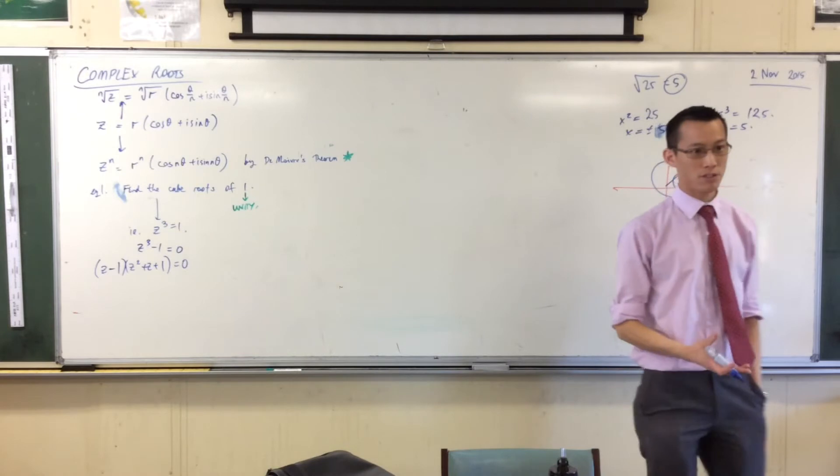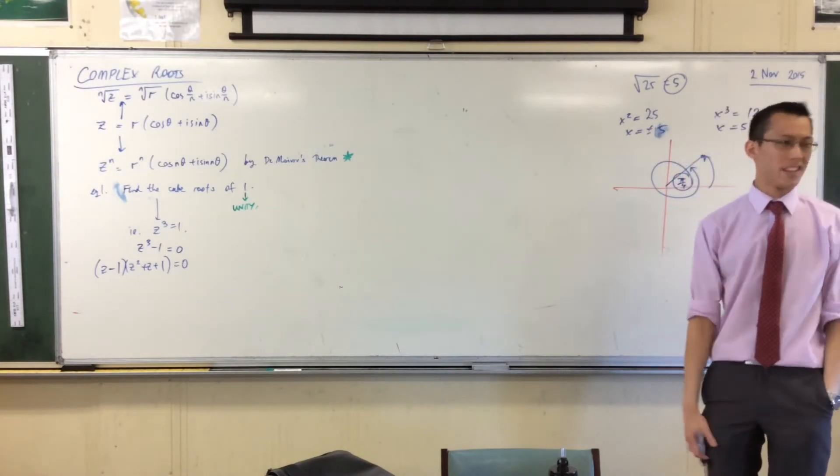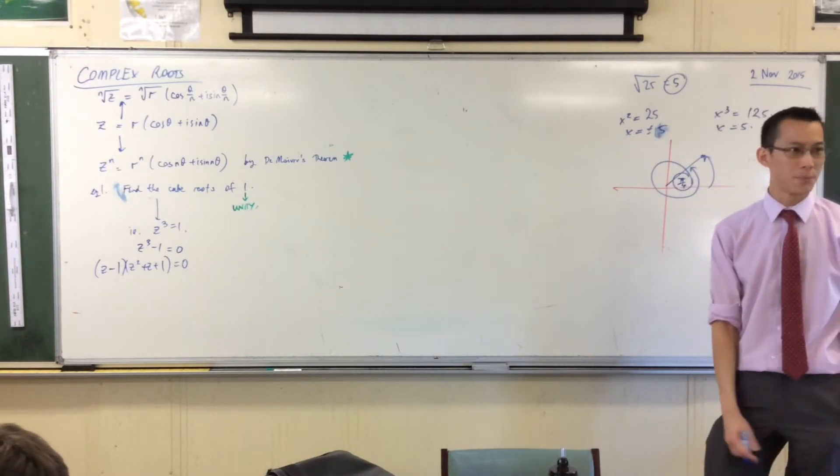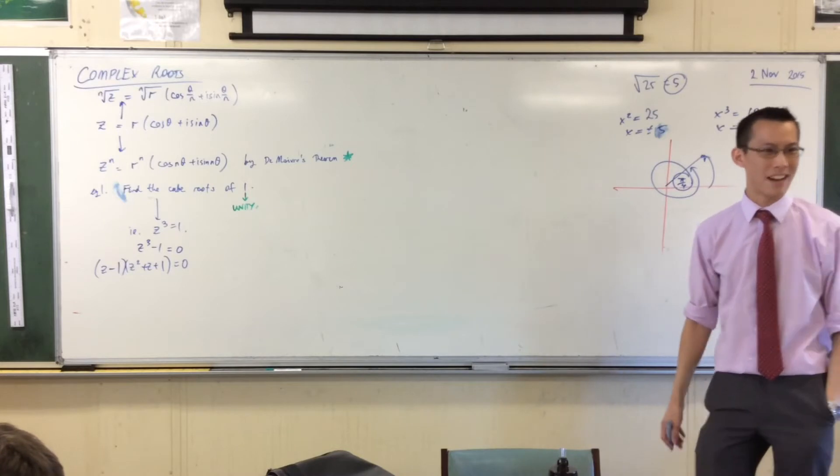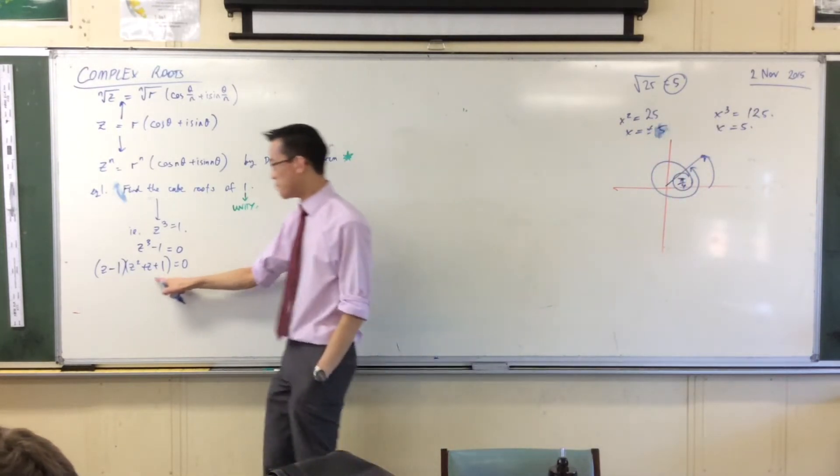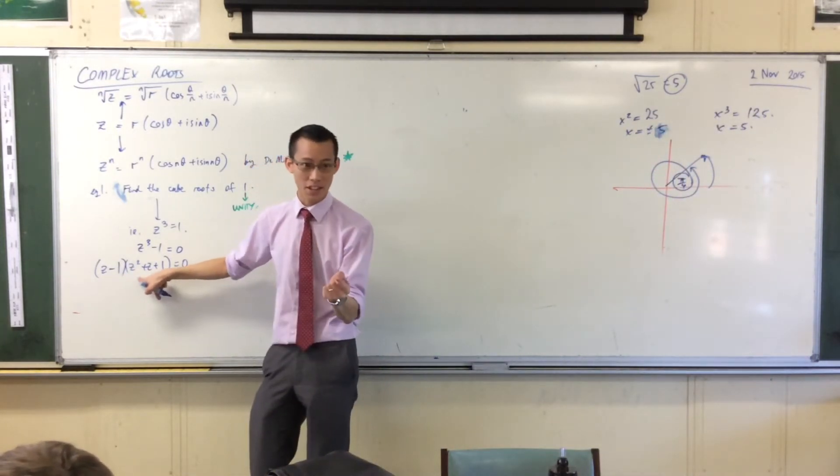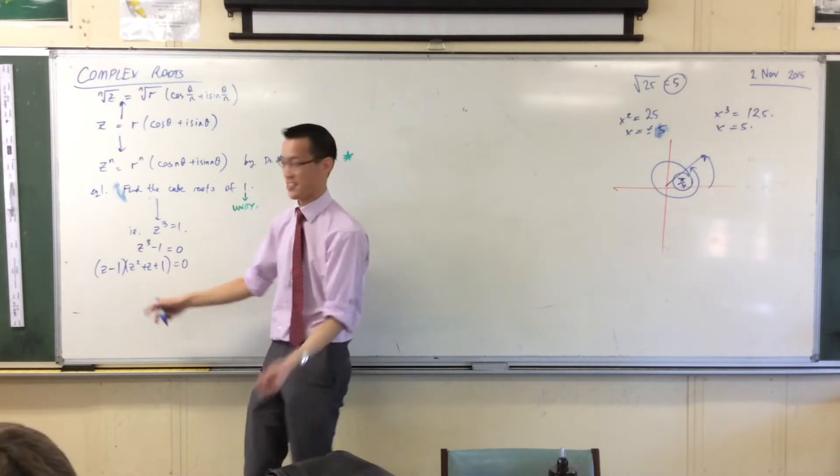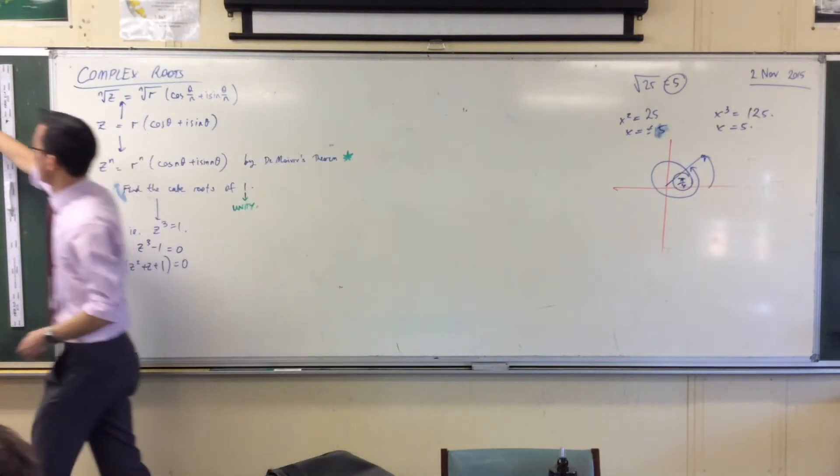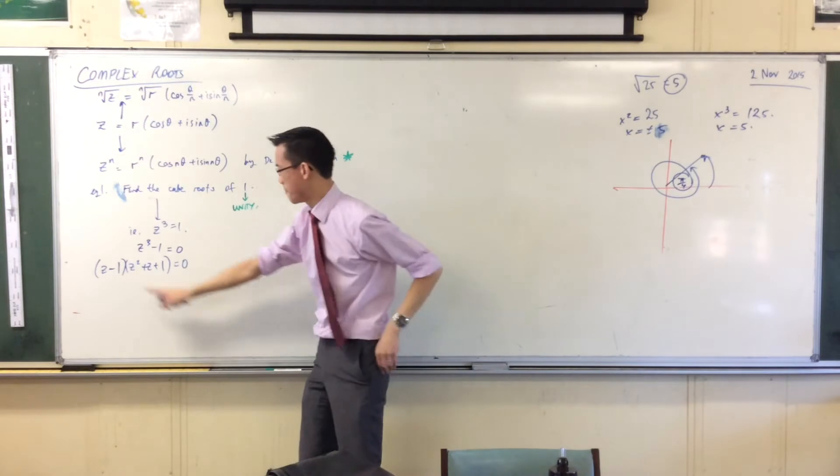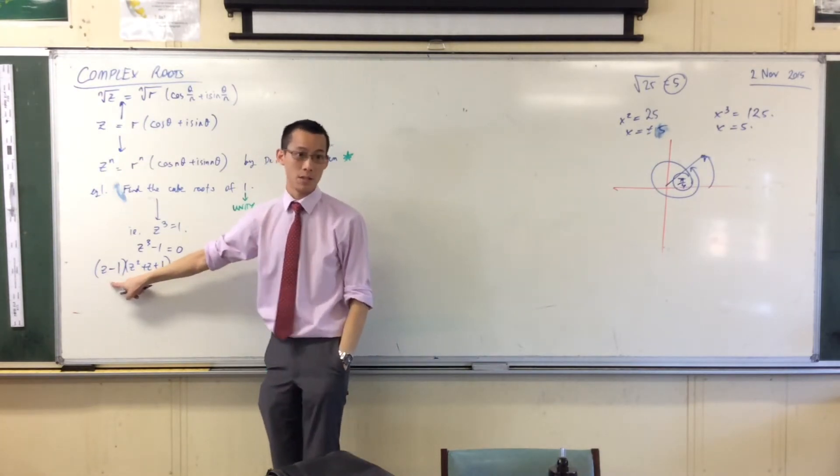If we were in the real number field, usually at this point I would stop. There's nothing I can do with that thing over there on the right. But I'm not in the real number field. I can go further than this. I can do a linear factorization because I'm in the complex numbers. What solution do I get out of this? One.